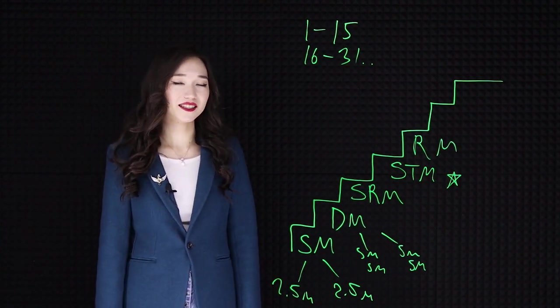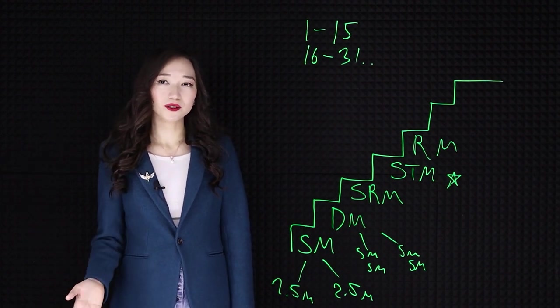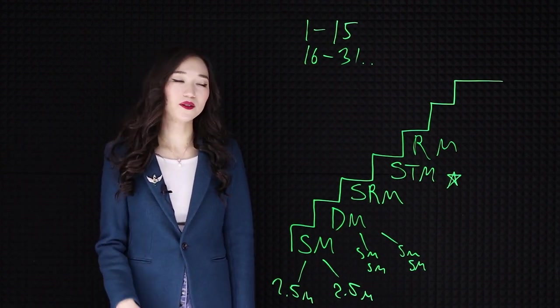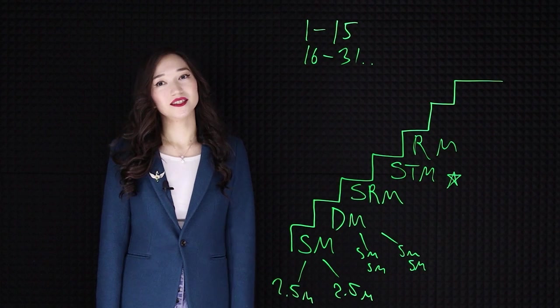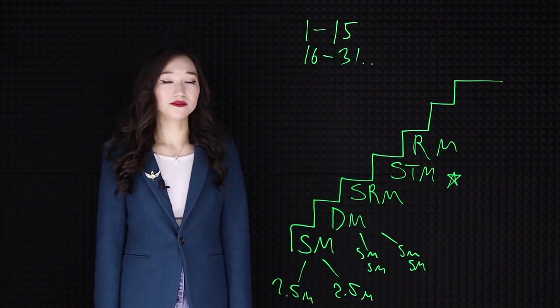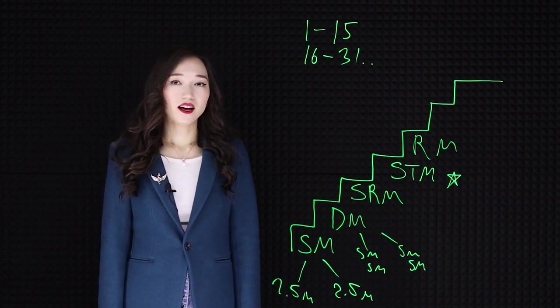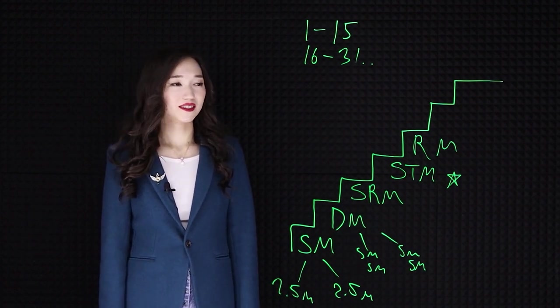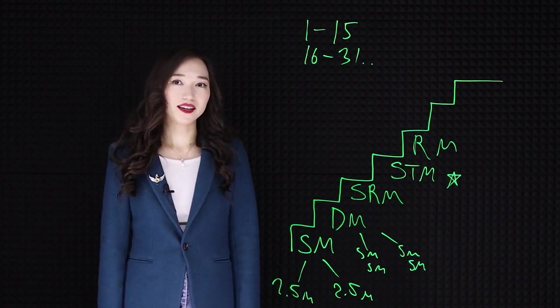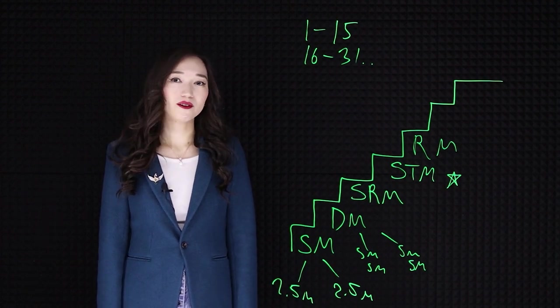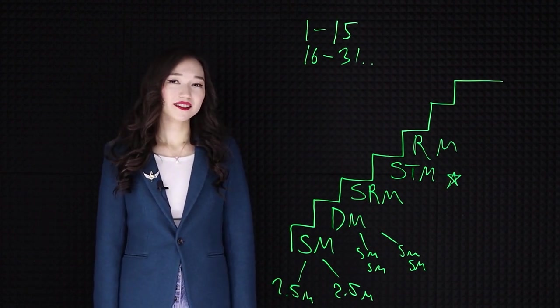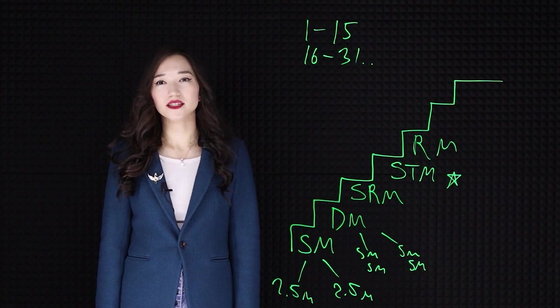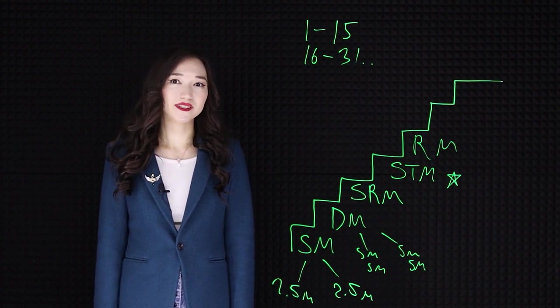The next level is called Royal Master, which means you have two Star Masters on the left and two on the right. You get a monetary reward of $50,000. And you also get cruise tickets for 11 days, car rental fee and you get $2,000 for your expenses.